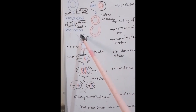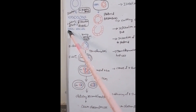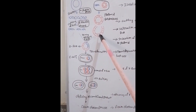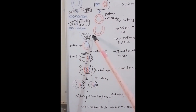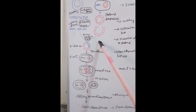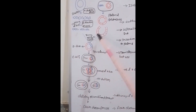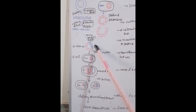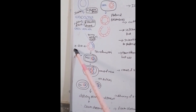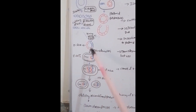Next, insertion of DNA into the plasmid. The DNA fragments are inserted into the plasmid using ligase enzyme. Ligase joins both DNAs — the foreign DNA and the plasmid DNA. When these DNAs are joined, a new DNA is formed, called rDNA.